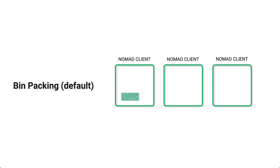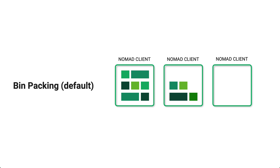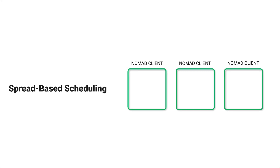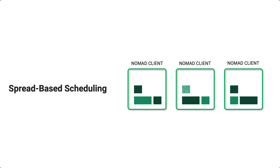Number three, Nomad actually defaults to what's called bin packing for scheduling allocations across Nomad clients in an attempt to save costs, so you don't have a bunch of Nomad clients that are underutilized. Bin packing will load up your Nomad clients one at a time and then move on to the next. If you don't like this, you can easily change the default algorithm to spread, which I recommend to ensure your applications are highly available. Spread will ensure that your workloads are spread evenly across all of your client nodes in each data center.